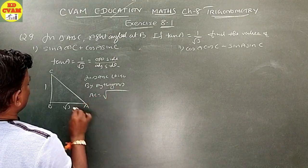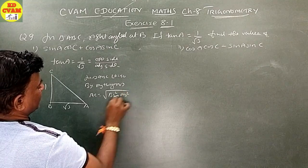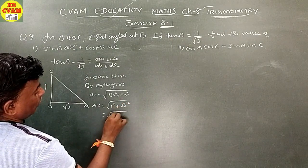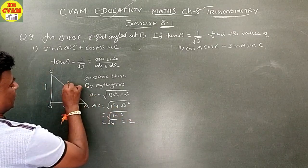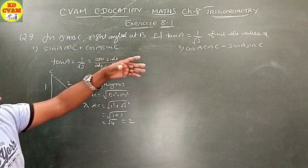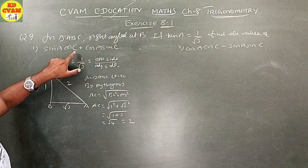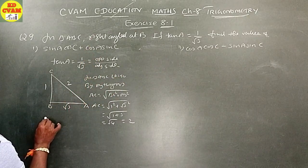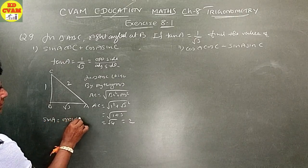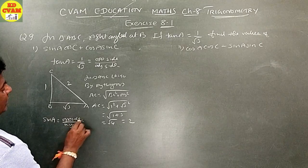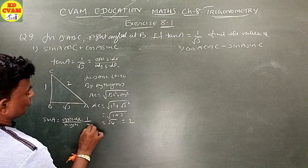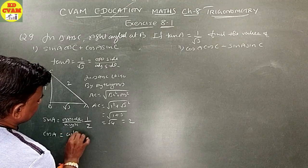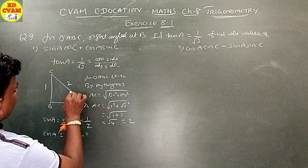By Pythagoras, AC equals square root of BC square plus AB square. AC equals square root of 1 squared plus root 3 squared, equals square root of 1 plus 3, equals square root of 4, which equals 2. Sin A equals opposite side upon hypotenuse, which equals 1 upon 2. Cos A equals adjacent side upon hypotenuse, which equals root 3 upon 2.